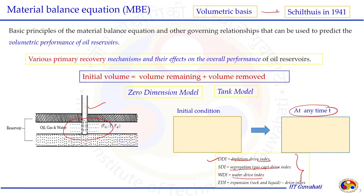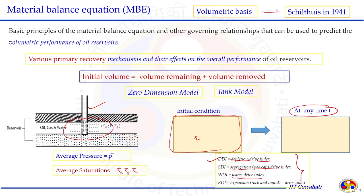This model is also called the zero-dimension model because we are not considering fluid flow in a particular direction or multiple directions. It is just a tank model where the zero-dimension concept is applied. In that case we consider the average pressure of the reservoir — initially at Pi, and at any time at pressure p, both representing the average pressure.